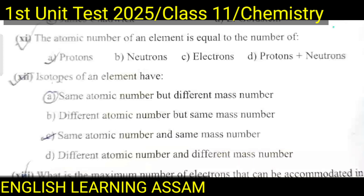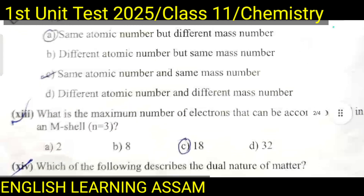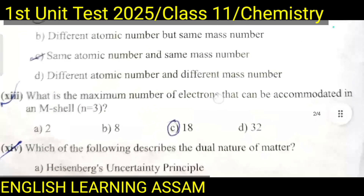Question number twelve: Isotopes of an element have — A. same atomic number but different mass number. The correct option is B — same atomic number but different mass number.